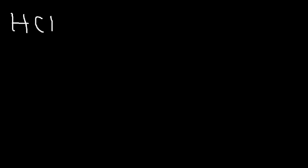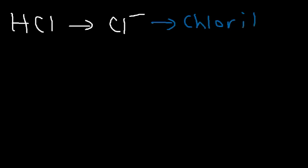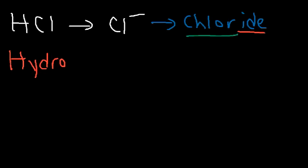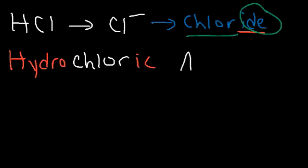Name the binary acid HCl. HCl contains the monatomic ion known as chloride. So to name the acid, we need to add the prefix 'hydro-'. Then instead of saying 'chlorine', we're going to replace the '-ide' with '-ic'. So it's hydrochloric acid.